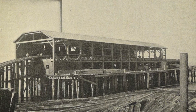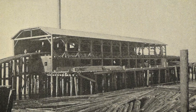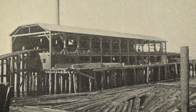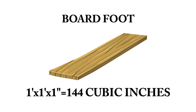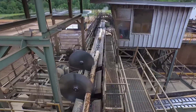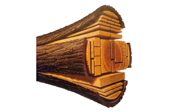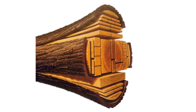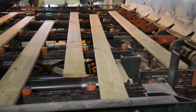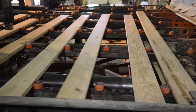Saw timber volume was historically measured in board feet. A board foot is defined as a board or plank measuring one inch thick by one foot wide by one foot long. This measurement is based on the nominal dimensions of rough green boards that can be sawn from the logs before shrinkage from drying and planing.